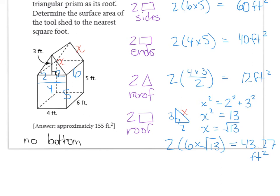To find the total surface area of the tool shed now, we're going to take each of the square feet portions that we found relating to the different parts of the tool shed and add them together. 60 squared feet, adding 12 squared feet, adding 43.27 squared feet.